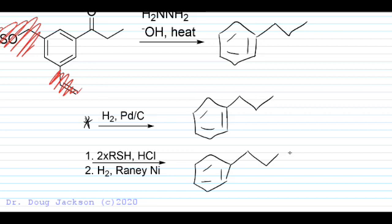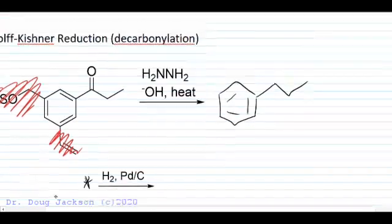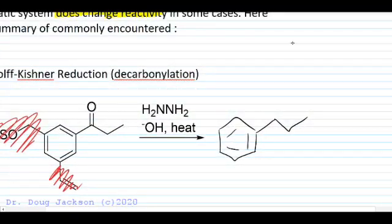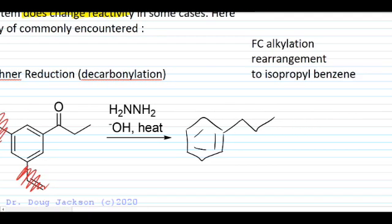These primary alkyl substituted benzenes are good to have a way to get to because the Friedel-Crafts alkylation would cause a rearrangement in this particular one to an isopropyl benzene. It would rearrange in the process of reaction. So Wolff-Kishner and all three of these are going to avoid that occurring.